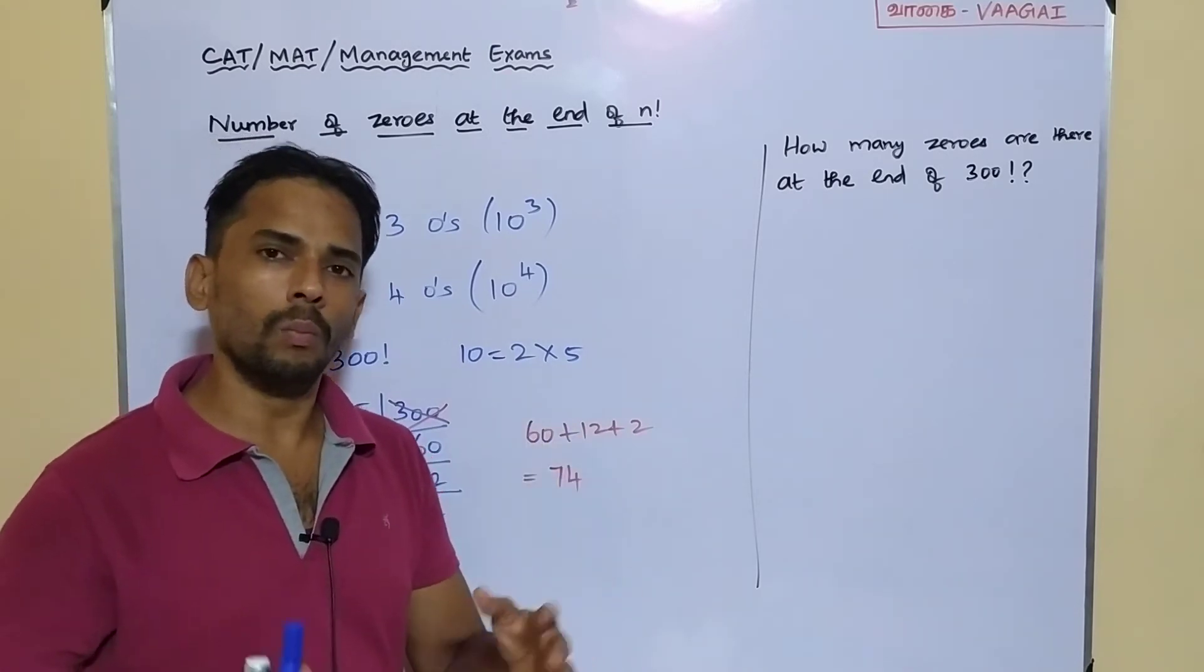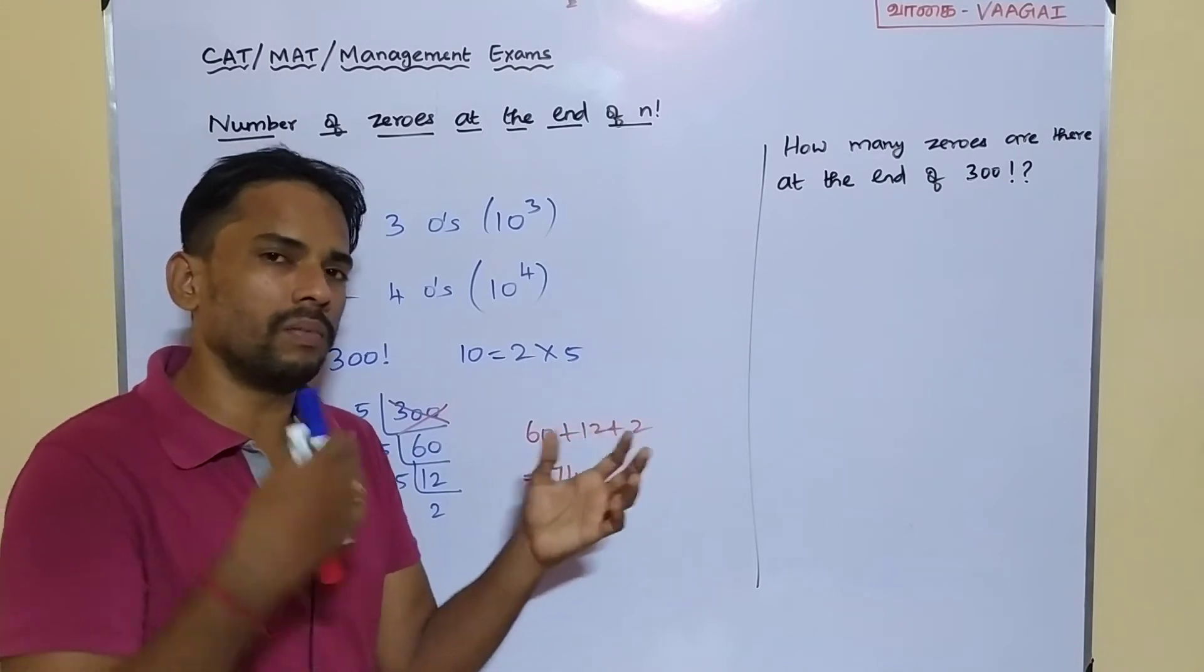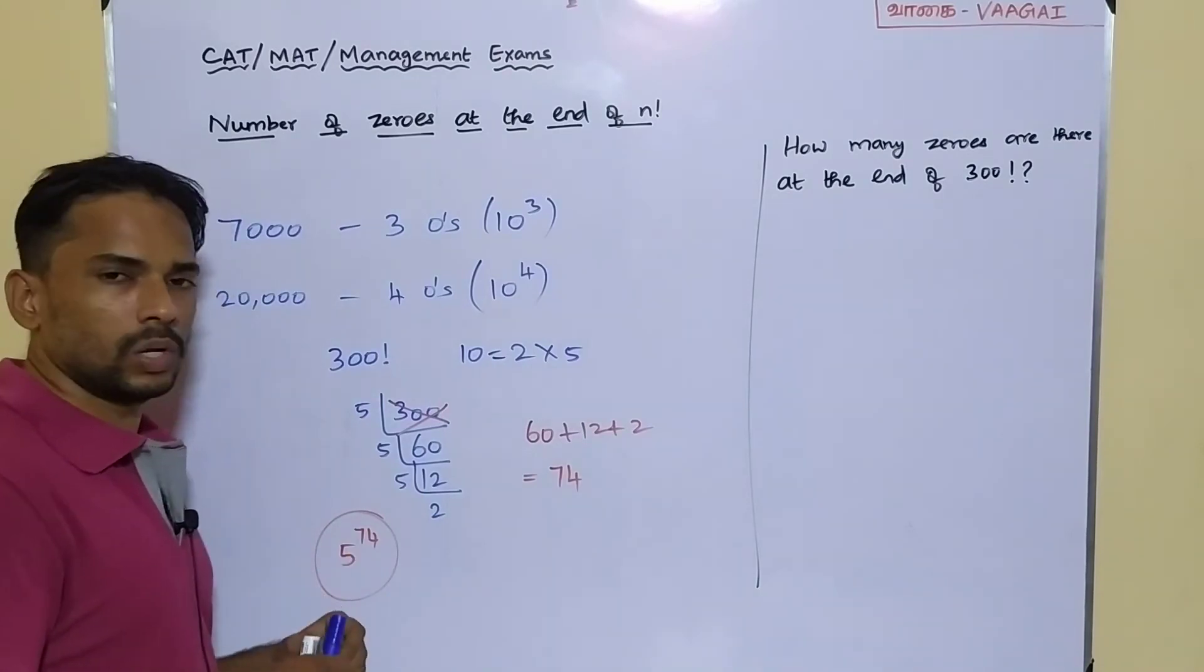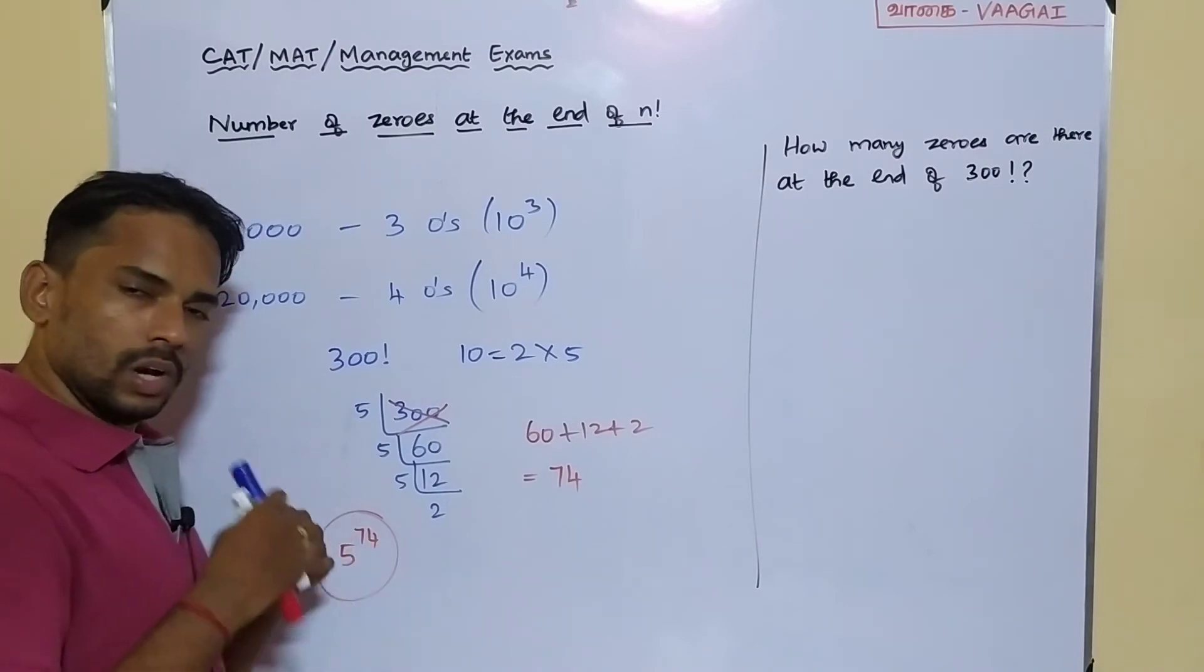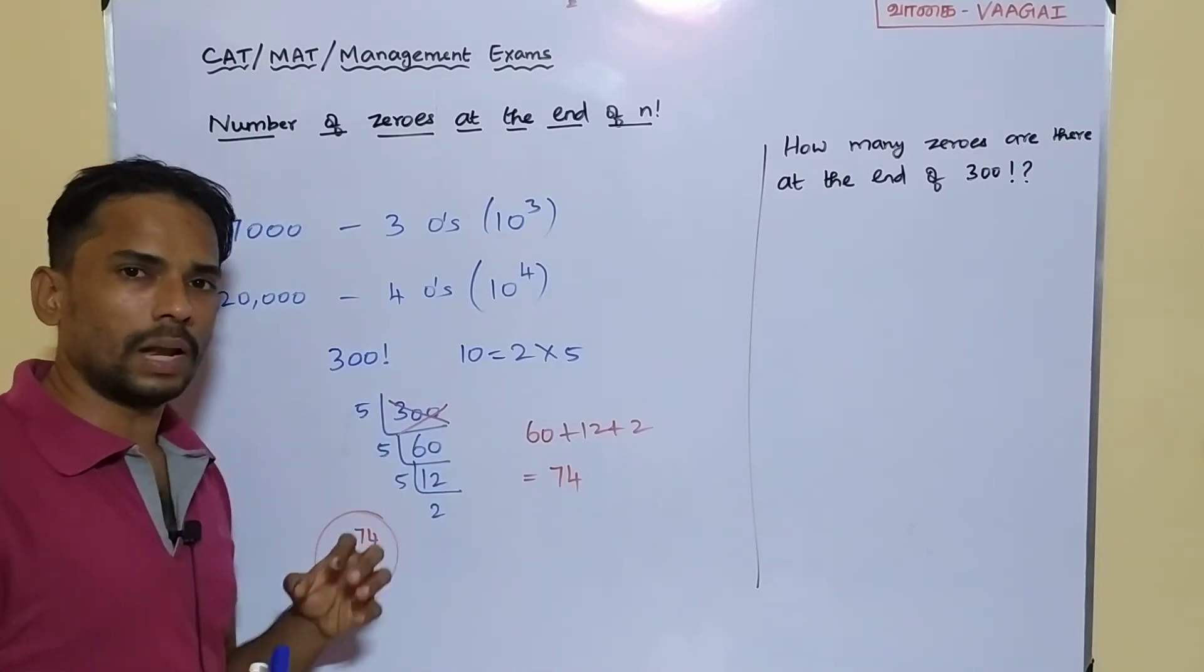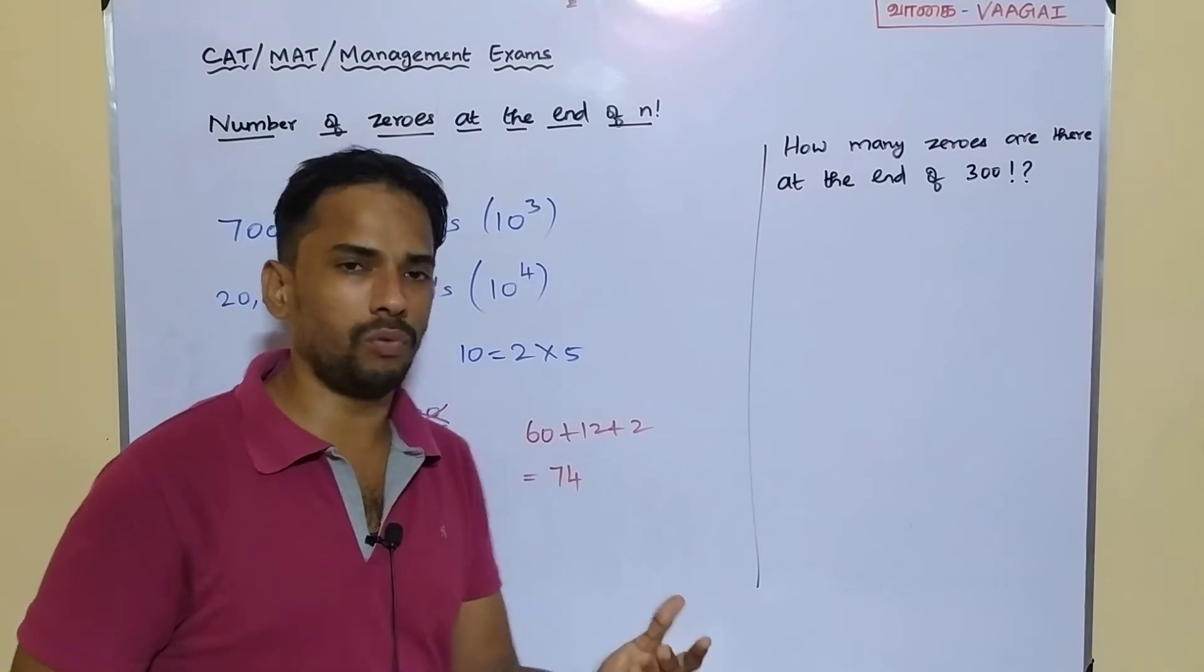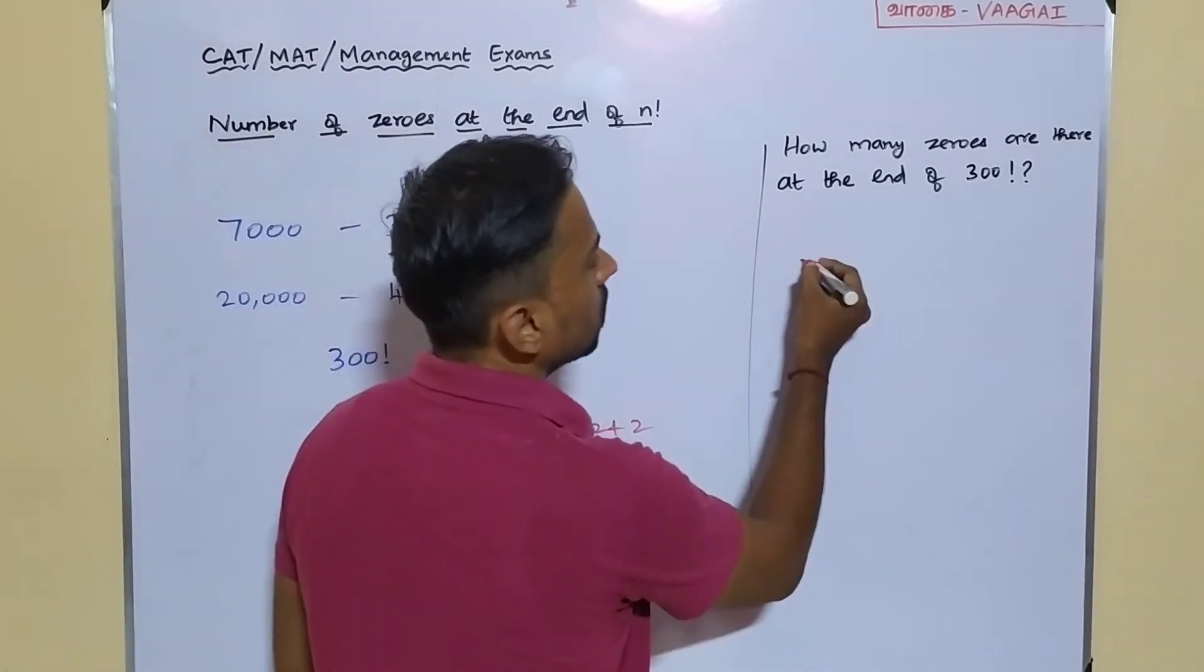That means we can collect more number of 2s than how many powers we collected for 5. More than that, we can collect the powers of 2. In that case, we can assure that 5 power 74 and 2 power will be even more than 74. In that way, we can maximum form 10 power 74 inside this 300 factorial. That's going to be our result.